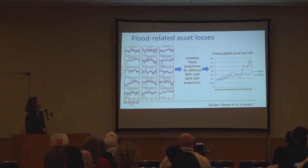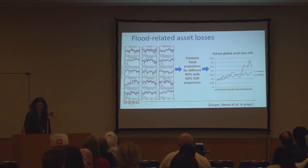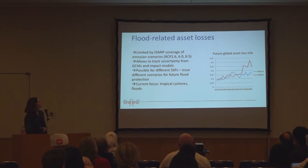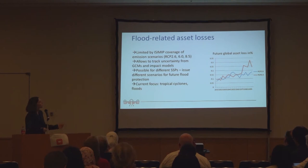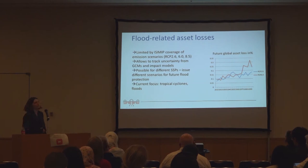Now we can take this and apply it to the future by taking future flood projections from ISIMIP future climate data, applying hydrological modeling for two different RCPs, and combining that with SSP-based GDP projections. We then get time series of future global asset losses. The scenarios are limited by ISIMIP's RCP coverage, but it allows us to track uncertainty both from GCMs and impact models. We do face the problem of translating GDP into assets — keeping that ratio constant is a strong assumption — and in the SSP framework we would also need to think about different scenarios for flood protection. We currently apply this approach for tropical cyclones and floods.